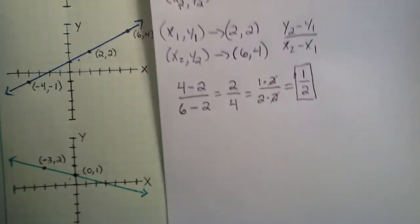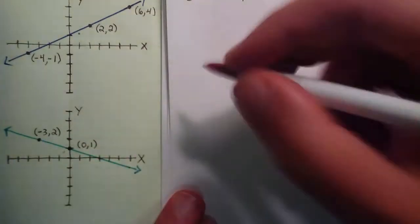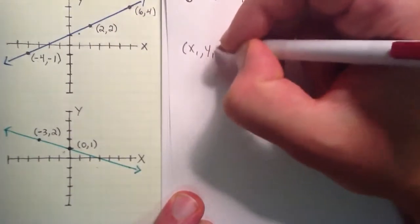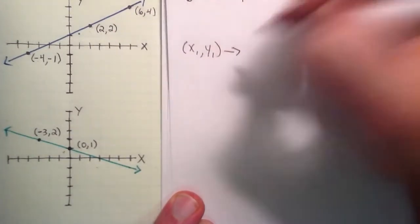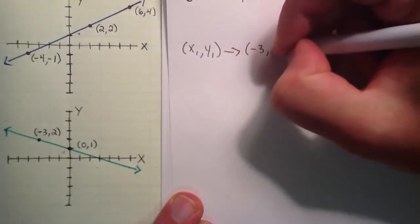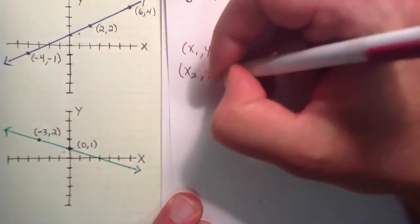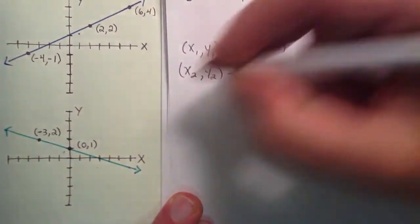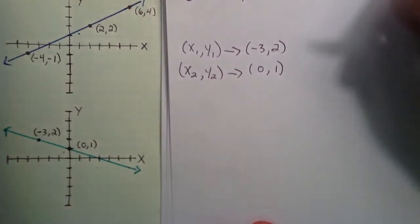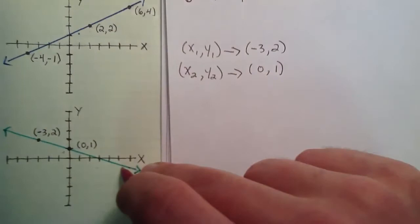So let's determine the slope of the lower line here. So let's just go ahead and say that x1, y1 is negative 3, 2. So then of course we'll choose our x2, y2 to be the point 0, 1. So the only condition really is that these be two points that fall on this line.